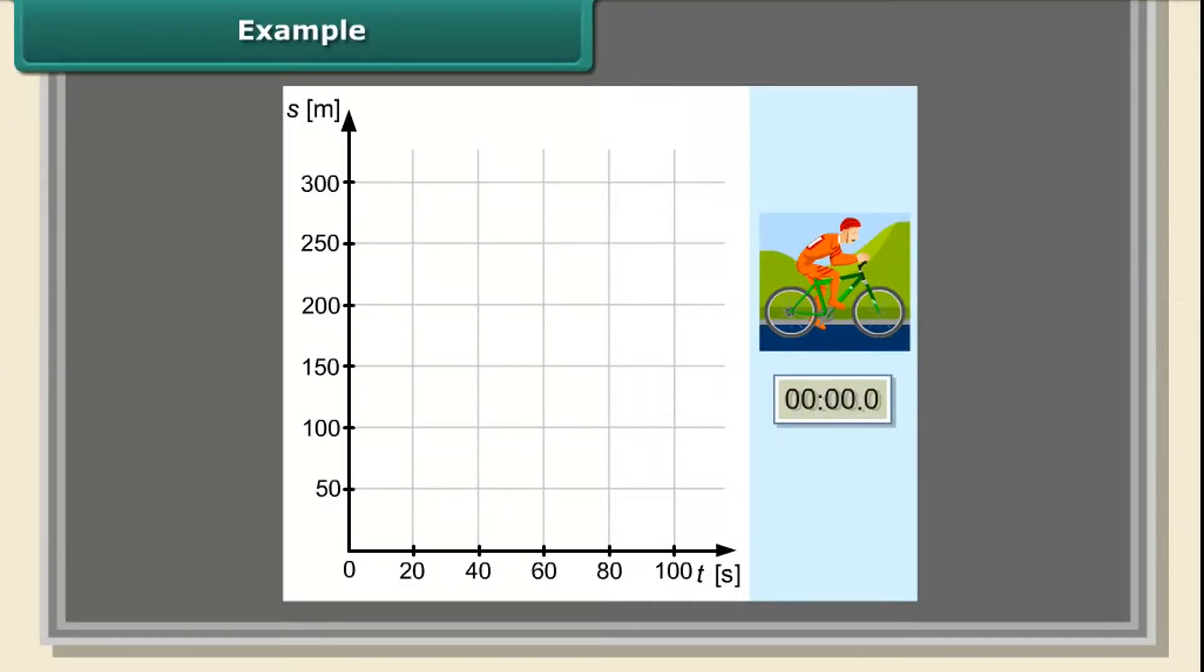This is the location-time graph for a cyclist. While plotting the graph, the short movements of time where the cyclist changed his speed were neglected. From the graph, we can determine the location of the cyclist at a given movement.